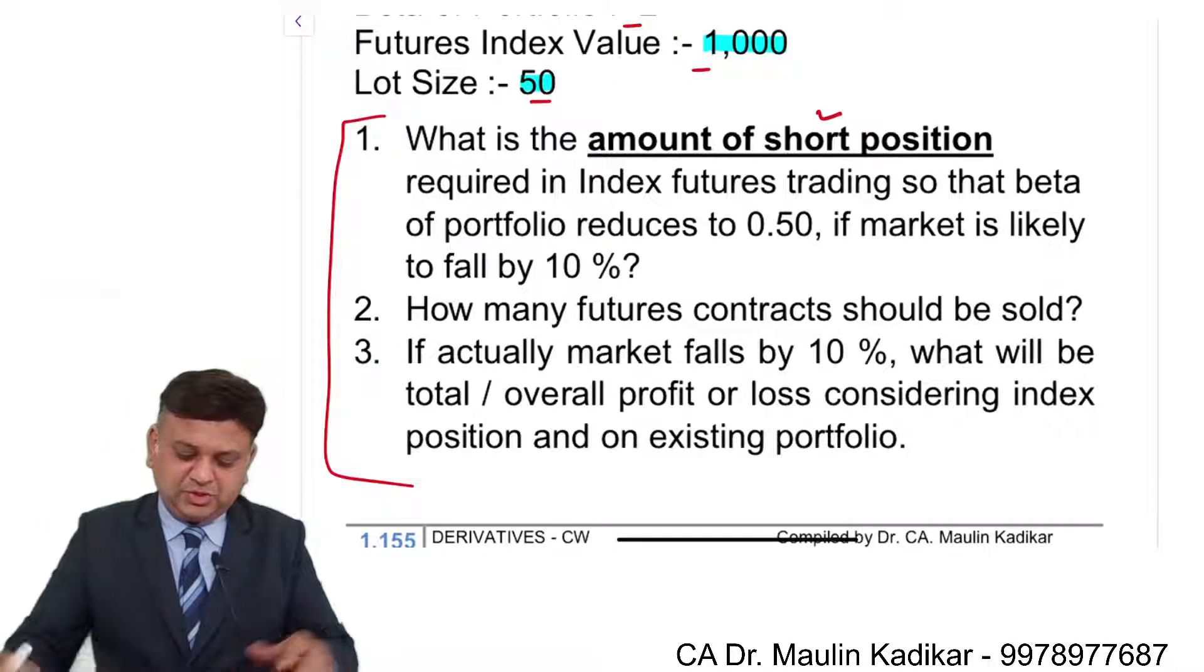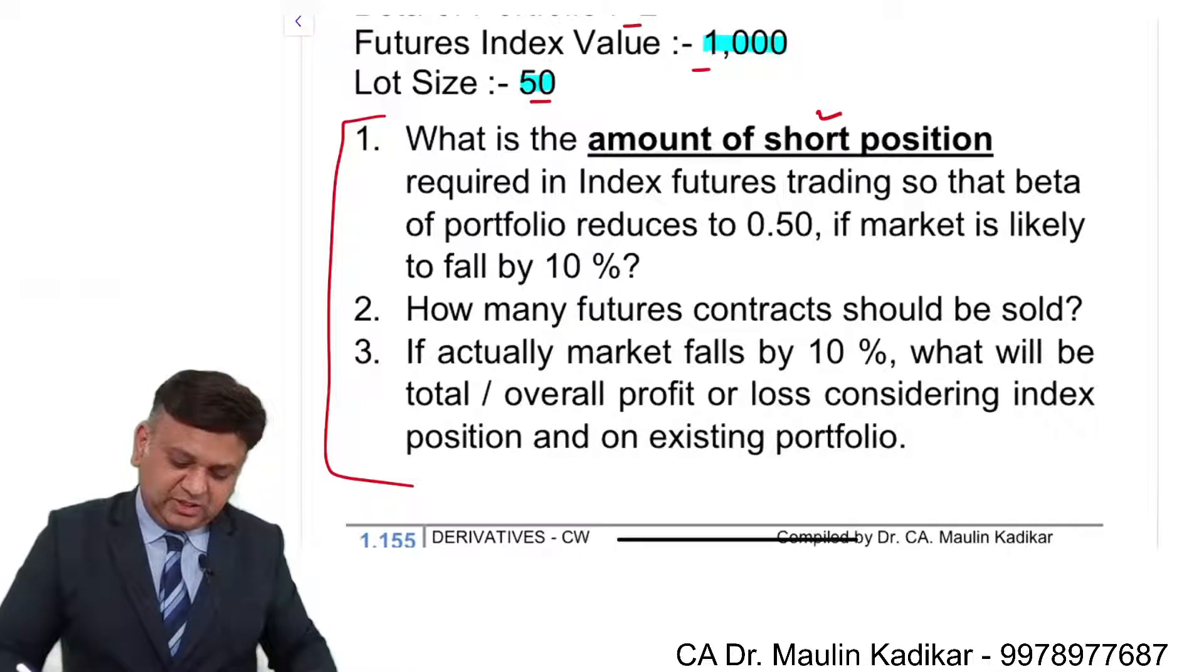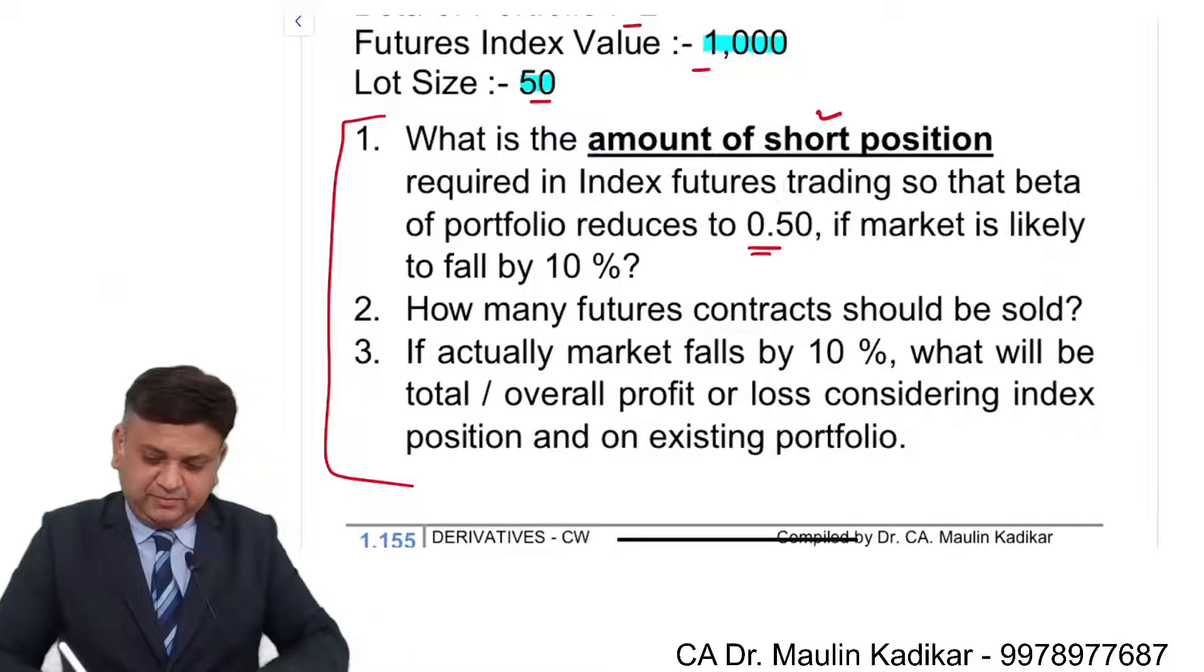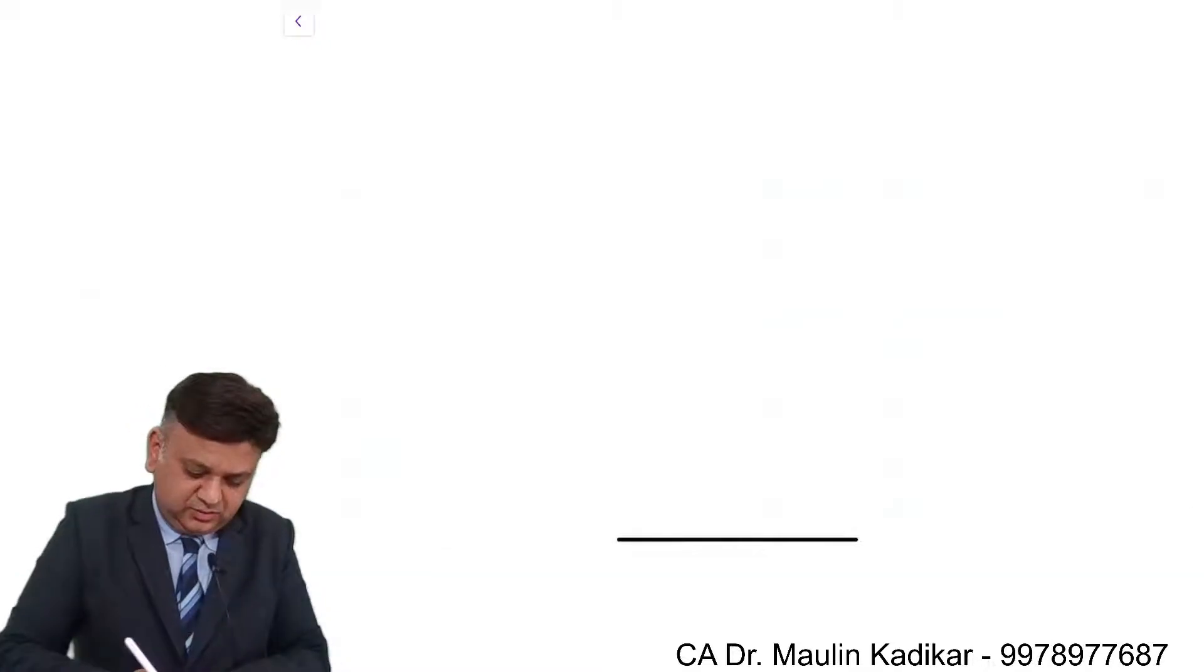What is the amount of the short position required in index futures trading so that the beta of the portfolio reduces to 0.5 if the market is likely to fall by 10%? So let us answer the question, first question.